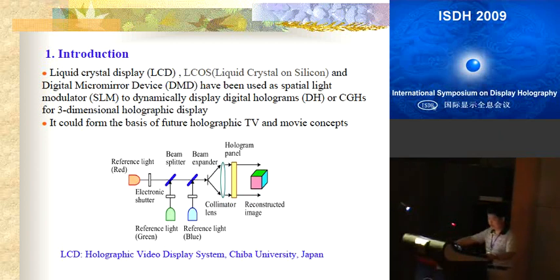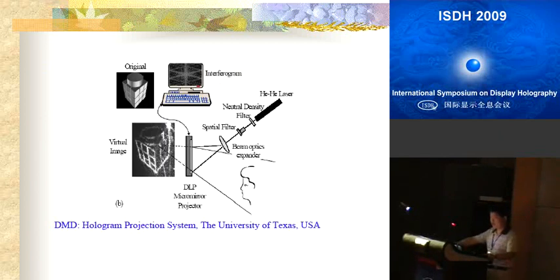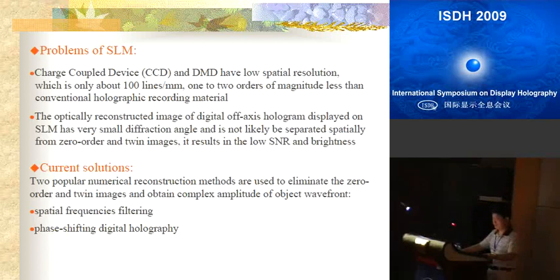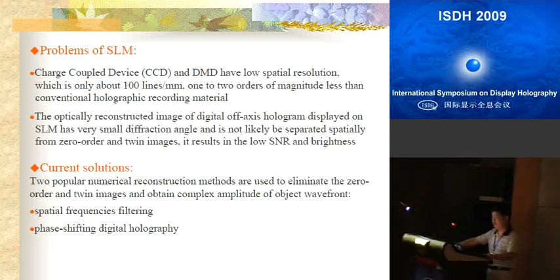The University of Japan used LCD to construct a holographic video display system, and the University of Texas used DMD to build a hologram projection system. The problem is that CCD and DMD have limited spatial resolution of only about 100 lines per millimeter, which is one to two orders of magnitude less than conventional holographic recording material. As a result, the optically reconstructed image of a digital hologram displayed on these devices has a very small diffraction angle and is not easily separated spatially.